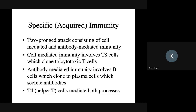Specific immunity has two parts: there's a cell-mediated portion that involves cells, and then there's a portion that involves antibodies. Antibodies are not cells — they're just proteins — and antibodies don't actually kill cells or cause cytolysis. But they need each other: cell-mediated immunity cannot work by itself, and neither can antibody-mediated immunity.